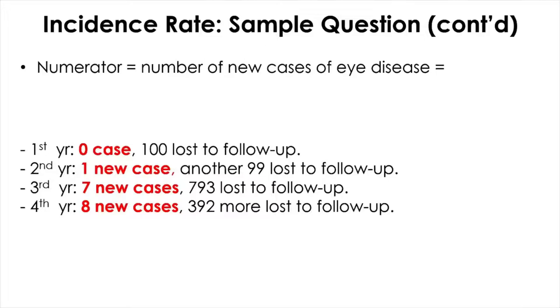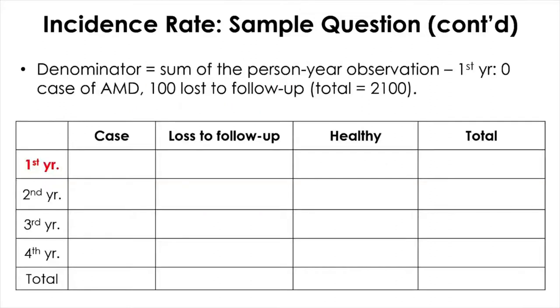You can just add all the new cases from across all four years. That's 0 plus 1 plus 7 plus 8, which becomes 16. So 16 will go to the numerator, but the calculation of the denominator will become quite convoluted.